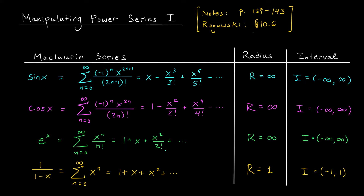Another example that we haven't talked about directly, but we've danced around for several weeks now, is the function 1 over 1 minus x. This function shows up quite a bit, so it's important to remember its Maclaurin series as well. You can check that it's given by the sum of terms x to the n: 1 plus x plus x squared, and so on. This is a geometric series — the first term is 1 and the common ratio is x. It will therefore converge when x is between minus 1 and 1, so it has a radius of convergence of 1. According to the geometric series formula, the sum will be 1 over 1 minus x — the function we started with.